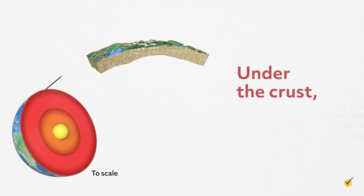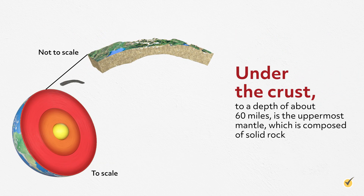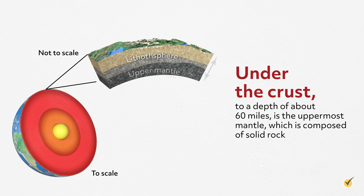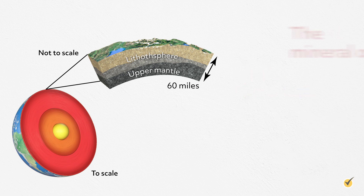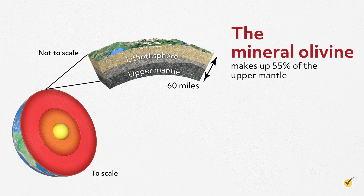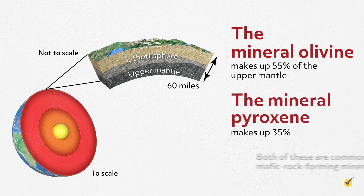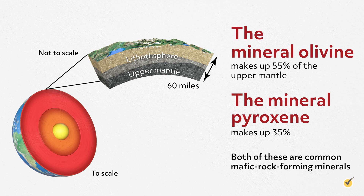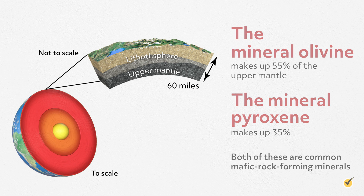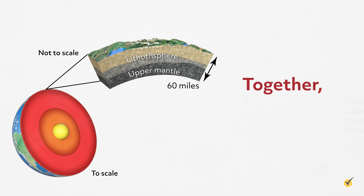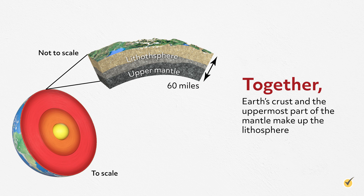Under the crust, to a depth of about 60 miles, is the uppermost mantle, which is composed of solid rock. The mineral olivine makes up 55% of the upper mantle, while the mineral pyroxene makes up 35%. Both of these are common mafic rock-forming minerals. Together, Earth's crust and the uppermost part of the mantle make up the lithosphere.